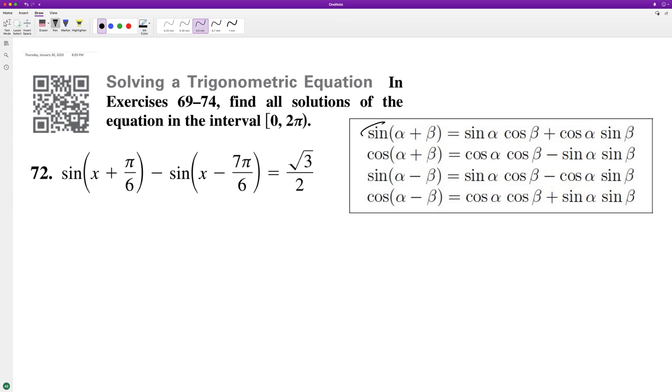It looks like we're going to use equation 1 and equation 2 here. All right, so starting off equation 1 for the first part, we're going to get sine of x times the cosine of pi over 6 plus cosine of x sine of pi over 6.